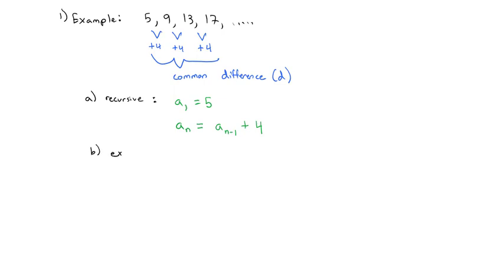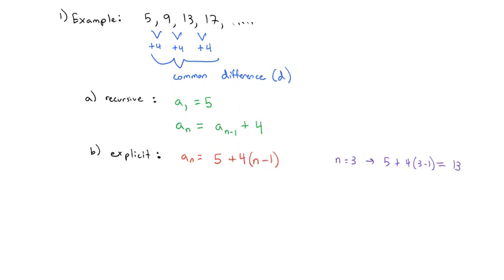We could define it with a recursive formula and say the first term is equal to 5, and then every nth term after that is the previous term plus that common difference. Or we can do it explicitly. You might be inclined to think we take 4 times the number, because we're adding 4 each time and repeated addition is multiplication. But we're actually going to do 4 times (n minus 1), because that accounts for the first term being numbered 1, not 0. Then we add the starting value, in this case 5. For example, when n equals 3, we have 5 plus 4 times (3 minus 1): 3 minus 1 is 2, times 4 is 8, plus 5 is 13. And the third term is indeed 13.